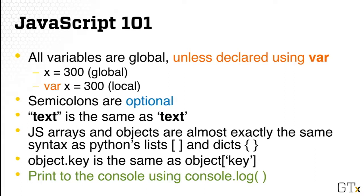Semicolons in JavaScript are optional. You can include them or not. My suggestion is to be consistent. If you're using semicolons, use them throughout. If you don't, then just don't use them throughout to avoid confusion. Double quote and single quote in JavaScript are the same. JavaScript arrays and objects are similar to what you expect in Python lists and dictionaries. object.key is the same as object['key']. You'll be printing error messages or text to the console a lot, so to do the printing, you'll do console.log.